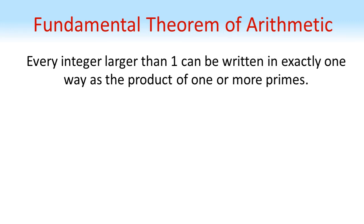In our examples so far, I've mentioned a couple of times that it doesn't matter which pairing of factors you start with. We're always going to get the same answer. Now the reason for this is the fundamental theorem of arithmetic. This states that every integer larger than 1 can be written in exactly one way as the product of one or more primes.